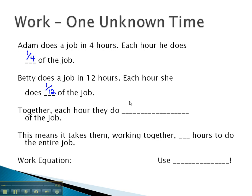Together, in each hour, we need to add these to find out how much work is done. Adam did 1/4 of it, Betty did 1/12 of it. And if we add those together, getting common denominators, we find out that 1/3 of the job is done each hour.